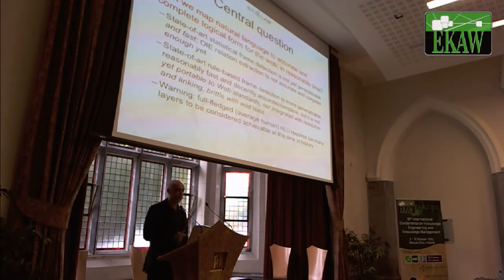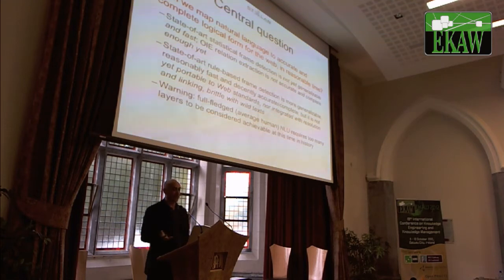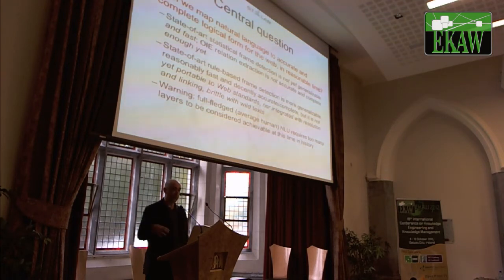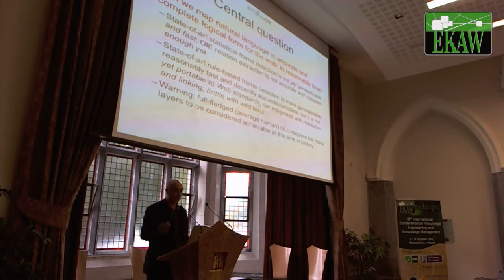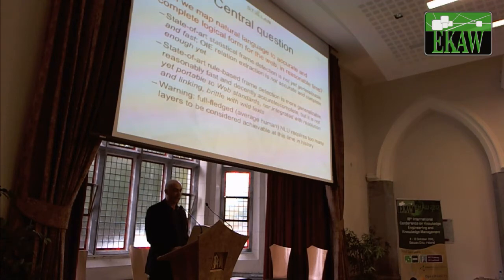We have two possibilities. State-of-art statistical frame detection is not yet generalizable and fast. We have relation extraction which approximates the task, like in open information extraction, but it is not accurate and complete enough yet. On the other hand, rule-based frame detection is more generalizable, reasonably fast, and decently accurate, but it is not yet portable to web standards, nor integrated with resolution and linking, and also brittle with wild text. This last point is not yet solved by us.